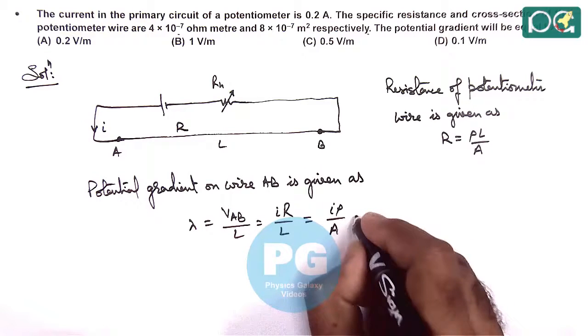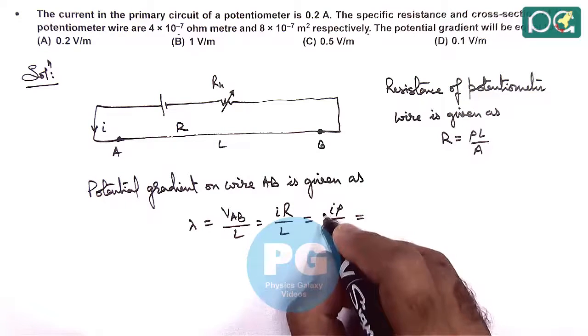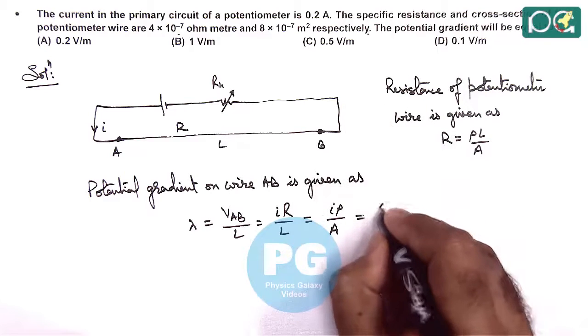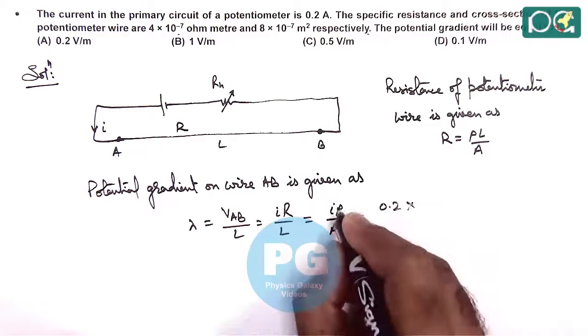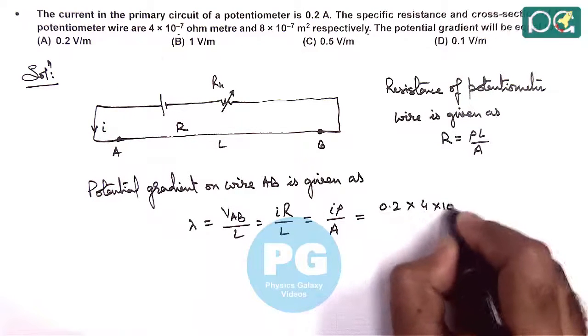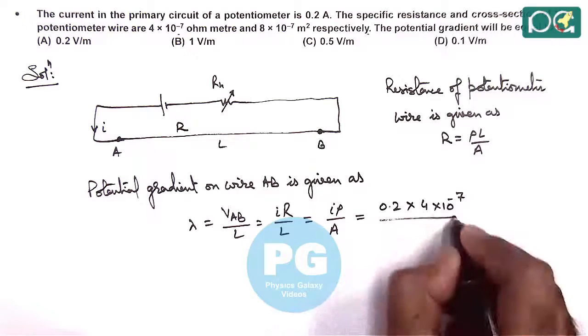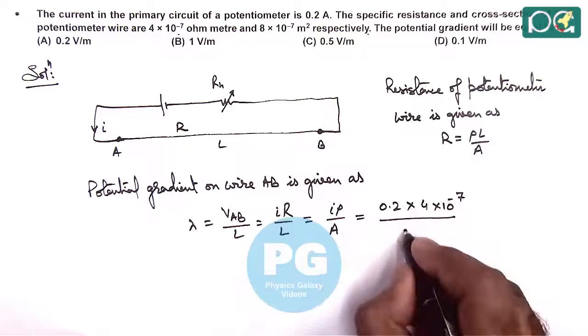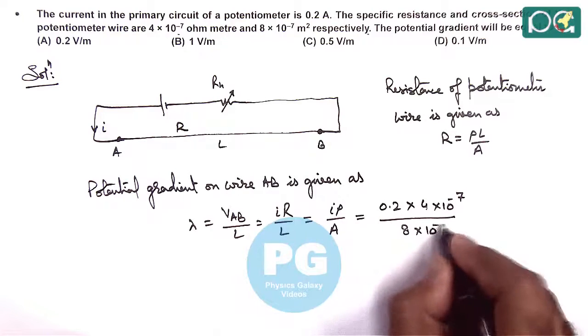So we can substitute the numerical values. Current is given to us as 0.2 ampere, resistivity or specific resistance is 4 into 10 to power minus 7, divided by cross-sectional area 8 into 10 to power minus 7.